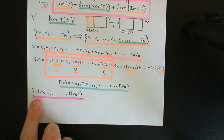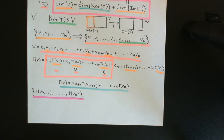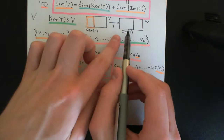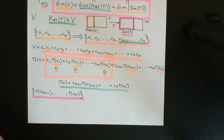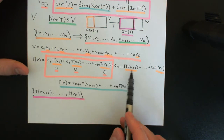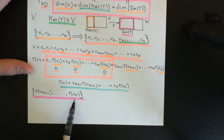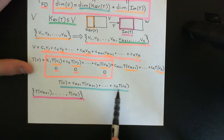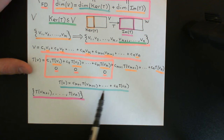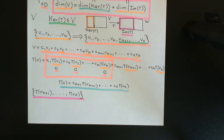What I'm now trying to prove is that these vectors — T(vk+1), T(vk+2), all the way up to T(vn) — are actually a basis for the image of the linear transformation. To do that, I need to prove that this set of vectors spans the entire image. That's not difficult: any vector in the domain is mapped onto a linear combination of these vectors, so anything in the image will be a linear combination of them. Therefore this set does span the image of the linear transformation.